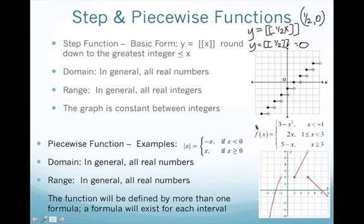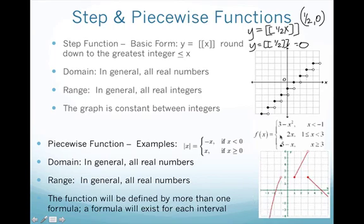Piecewise functions — we've already talked about those earlier in class. You're going to have multiple equations defined over intervals, and you might have possible jumps in the equation. That will be a piecewise function. In both step and piecewise functions, your domain is going to be all real numbers and your range is going to be all real numbers. In a step function, the graph will be constant with horizontal lines; in a piecewise function, you'll have multiple equations defining that function.